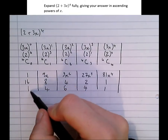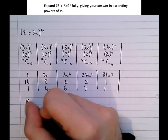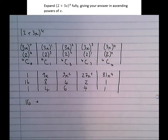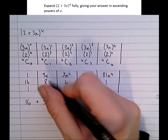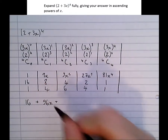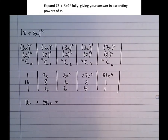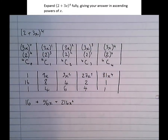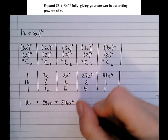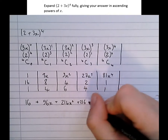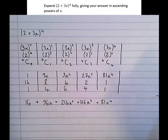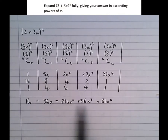Finally, all that's left is to multiply the columns together. 1 times 16 times 1 is 16. Then 3 times 8 times 4 is 96 — that's the x term. Then 9 times 4 times 6 is 216 — that's the x squared term. Then 27 times 2 times 4 is 216 again — the x cubed term. And 81 times 1 times 1 is 81 — the x to the 4 term. So we've expanded those brackets in ascending powers of x, done much more quickly by laying it out in columns.